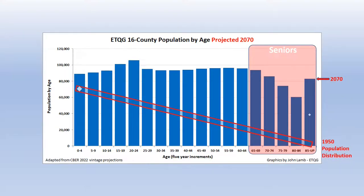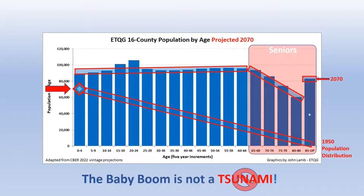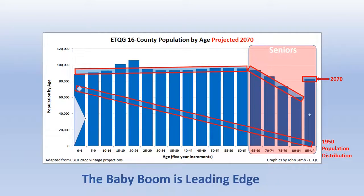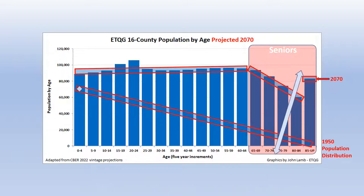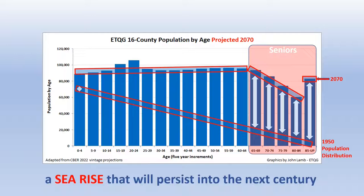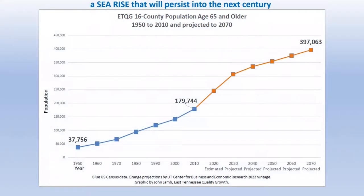Comparing the 1950 age distribution to the projected 2070 distribution, we can see the transformation to an aging population over 120 years. The beginning of the baby boom around 1950 was not the beginning of a future tsunami as portrayed in the popular press. The baby boom was and is and will be the leading edge of a generations-long transformation of the population, like a sea rise that will persist into the next century. To further illustrate the aging transformation and its long-term persistence, we can focus on the senior population count from 1950 to present and projected to 2070.